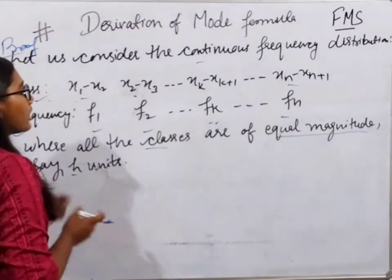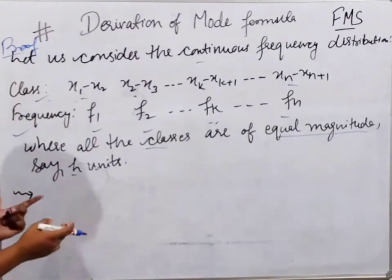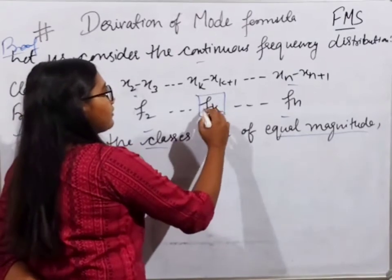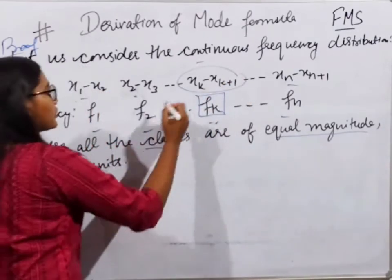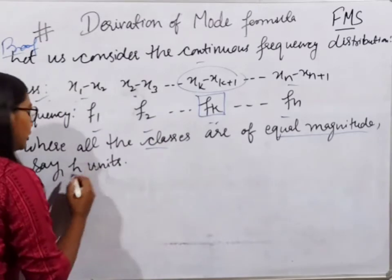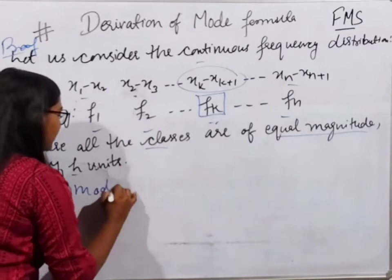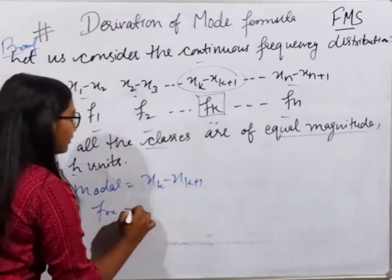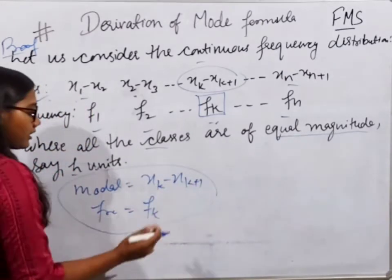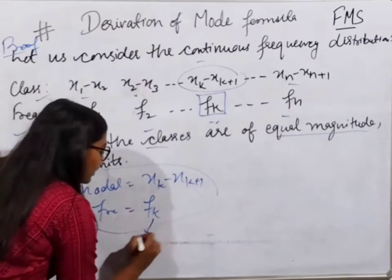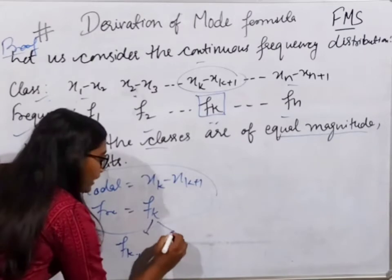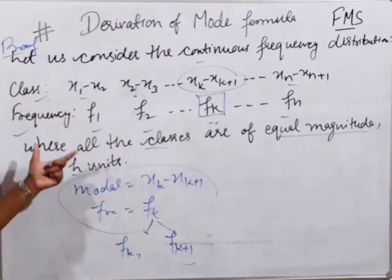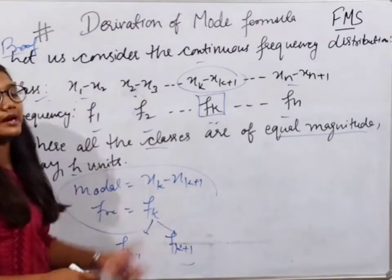In the mode, the value is the most repeating one. The most frequent observation corresponds to frequency fk, which I call the modal class. So the modal class is xk to xk+1 with frequency fk. The frequency preceding the modal class is fk-1, and the frequency following it is fk+1. Now let's draw the diagram and start the derivation.